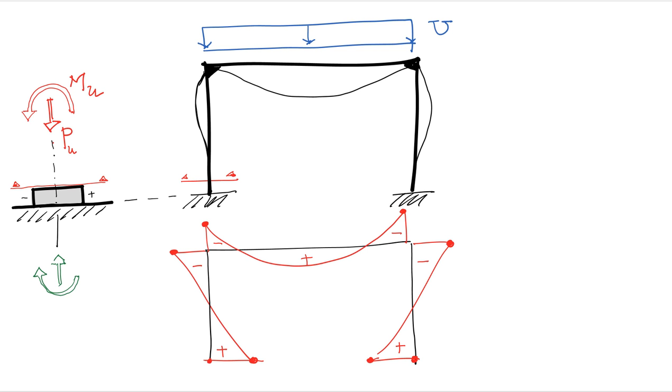Say you have a one story frame like the one I'm showing here and it's subject to a vertical load. Let's say that load has already been combined as one of the load combinations and you've got the ultimate load, the critical load, due to live and dead loads. That load creates axial forces, shear forces, and moments along the length of the various elements.